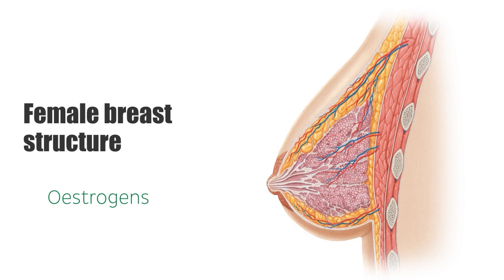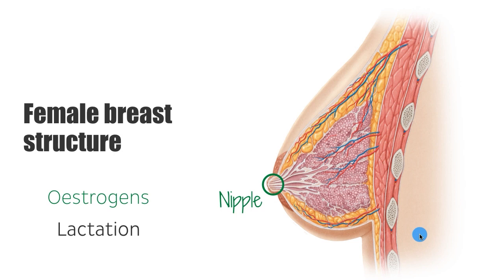One of the main functions of the female breasts is to produce and secrete milk for infants. Milk production by the female breast is known as lactation. Milk is released from the breast via the nipple, which is a small projection of skin in the middle of the breast, usually overlying the fourth intercostal space which is this space here.